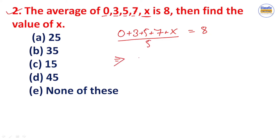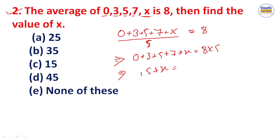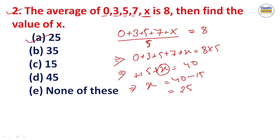Let us solve: 0 plus 3 plus 5 plus 7 plus x is equal to 8 times 5, which equals 40. Adding: 0 plus 3 is 3, plus 5 is 8, plus 7 is 15. So 15 plus x equals 40. Therefore x equals 40 minus 15, which gives x equals 25. So the value of x is 25.